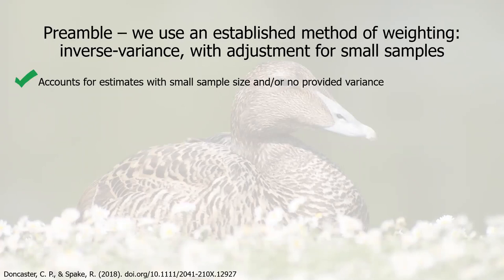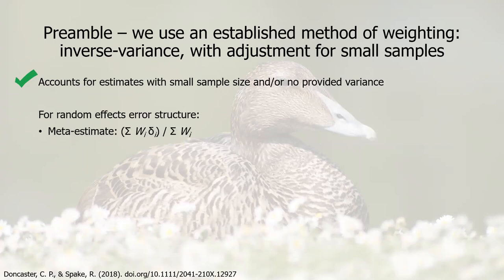The method we use is an established method of Doncaster and Spake — inverse variance weighting with adjustment for small samples. The benefit of this method is that it accounts for very small sample sizes and also allows you to use studies which haven't necessarily provided an estimate of variance. I'll quickly run through what this method entails.